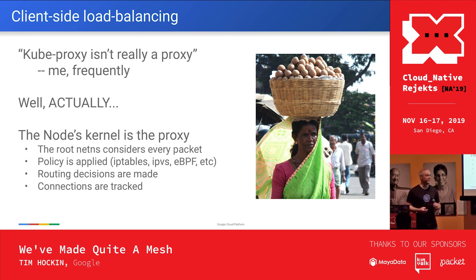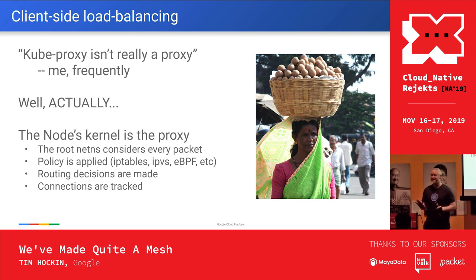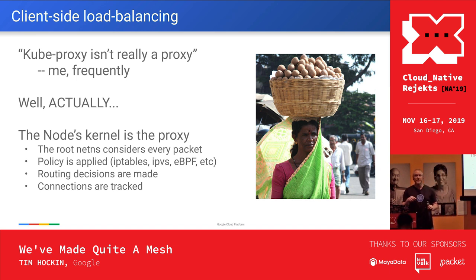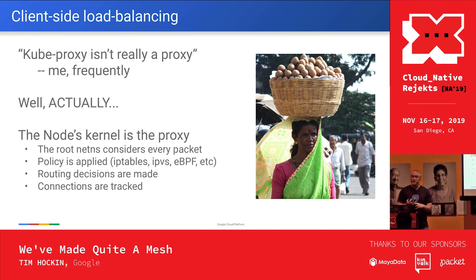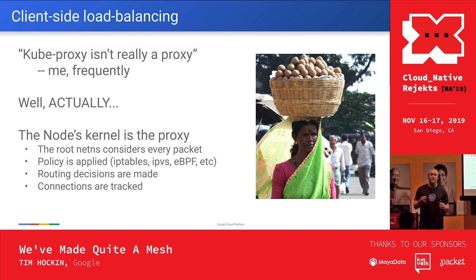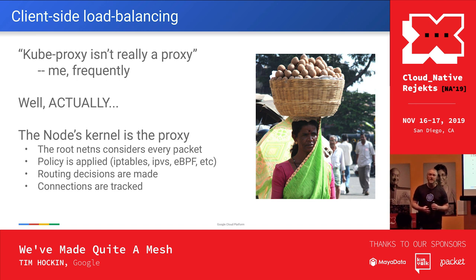Client-side load balancing. I have been on record many times saying kube-proxy is not really a proxy — it's a misnomer, a historical artifact. But actually, kube-proxy turns your node into a proxy. The kernel on your Kubernetes machine is, in fact, proxying all traffic. It looks at every packet, makes decisions about routing, can do fault injection — we don't use that in Kubernetes, but we could. It's a pretty dumb, low-touch proxy — it doesn't change the source address or do L7 processing, though the kernel can do kTLS now. So I think the kernel actually is a proxy.